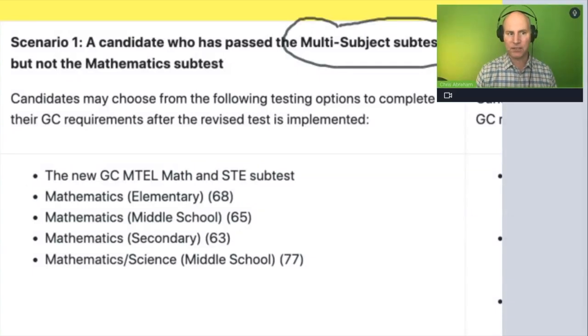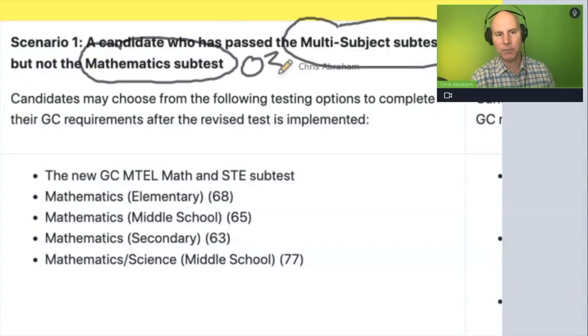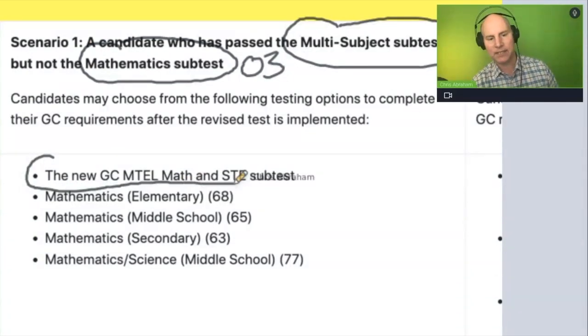Well, if you pass the multi-subject but not the math, you have to replace the math exam, the O3 exam, with one of the new exams. The most likely candidate is this one right here.